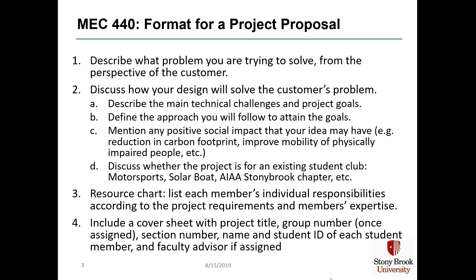The resource chart in question three should show what each person on the team will do according to your project needs and people's skills. For example, if your team needs patent analysis, market research, concept creation, mechanical design, prototype assembly, and prototype testing, write down which person will do which task. If a task is large enough, it may take more than one person to complete it — in that case, write down two or more names. Please make sure that all team members are gainfully employed on the project.